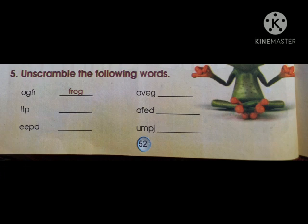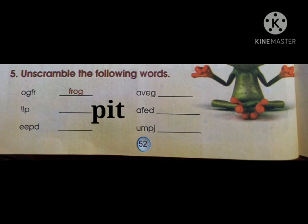The second one is I, T, P. Let's make it correct. 'Tip' is a word but it is not in our lesson, so we will not write it. We will write the word which is in our lesson: P, I, T — 'pit.' Yes, it is the word in our lesson, so it is 'pit.'